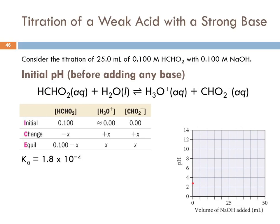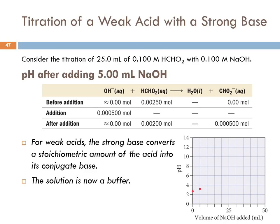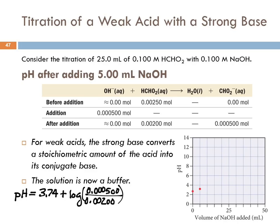Ka is 1.8 times 10 to the minus 4, so pKa is 3.74. Then pH equals pKa plus log of base over acid. The base is 0.000500 moles and the acid is 0.00200 moles. We end up with a pH of 3.14.